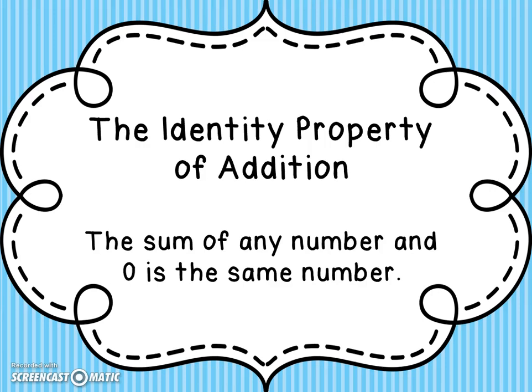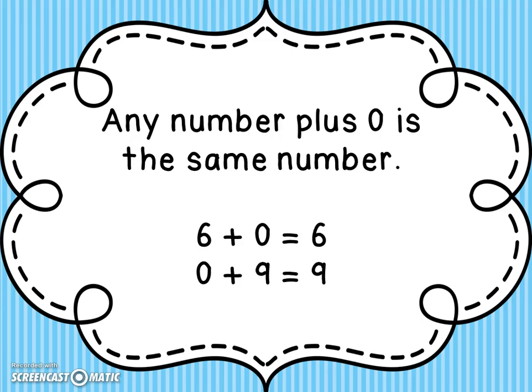The identity property of addition says the sum of any number and zero is the same number. Any number plus zero is the same number. For example, six plus zero equals six, and zero plus nine equals nine.